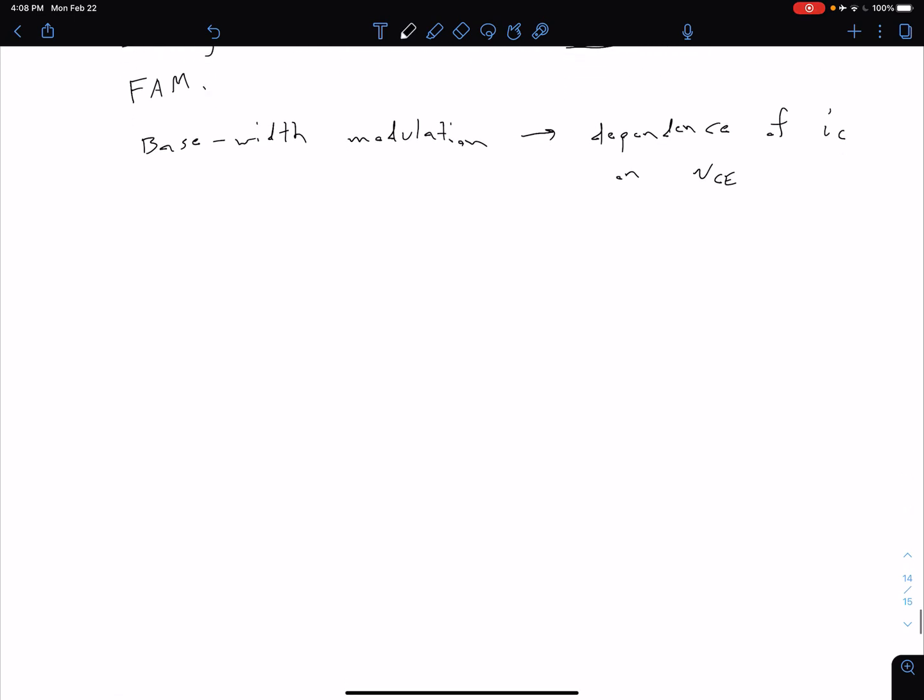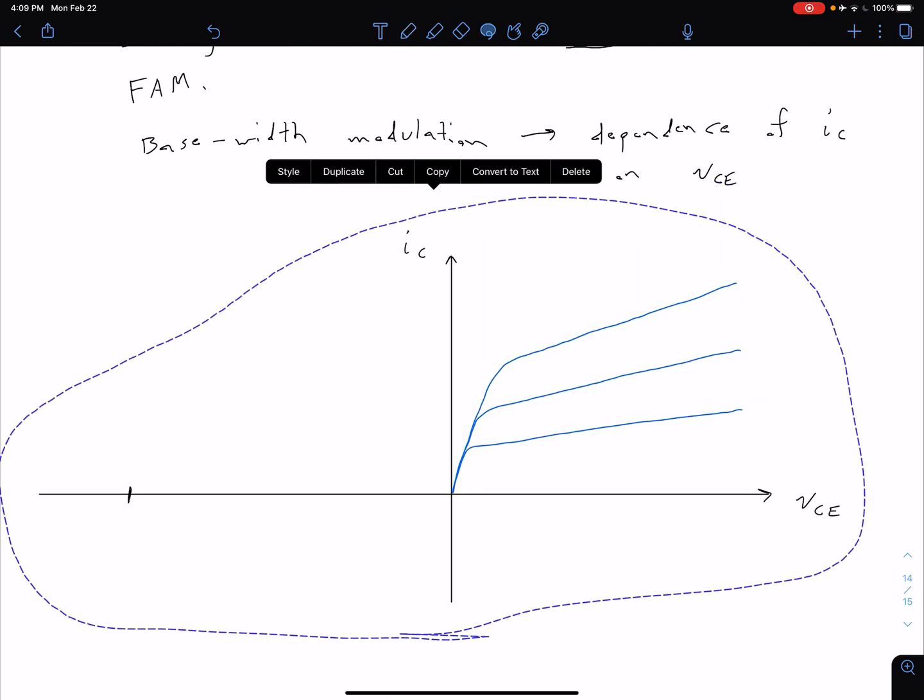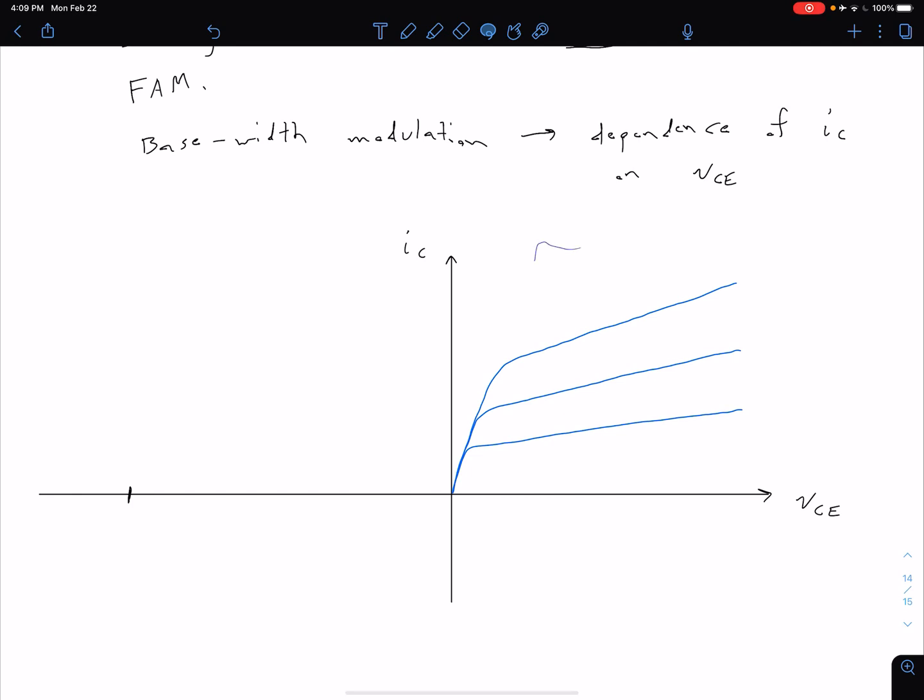And so what that looks like in terms of our IV curves is we're going to have something like this. So notice our blue curves now in our forward active mode, which is in this region here, no longer are horizontal.